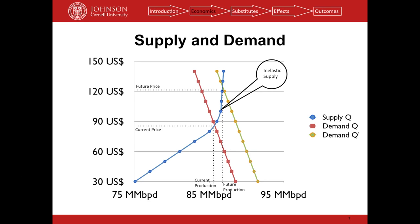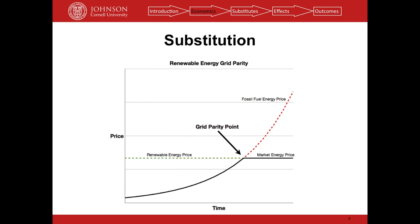Over the long term, if prices are very high, we start switching over to substitutes. From a grid parity standpoint, looking at electricity production, if we have ever-increasing prices for non-renewables like coal and gas, at some point they'll reach the price that renewable energy production is. Renewable energy production costs are flat because there are no input costs, and actually decreasing as we get better at manufacturing solar panels and wind turbines. That inflection point is known as grid parity, and once prices reach that point, we'll switch over to renewables.